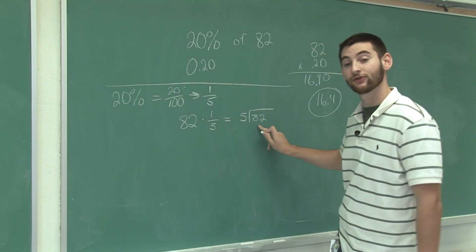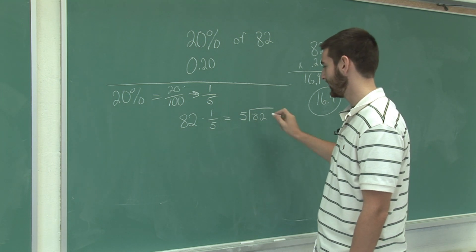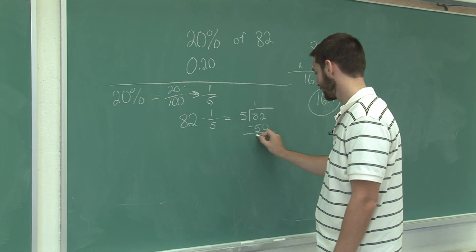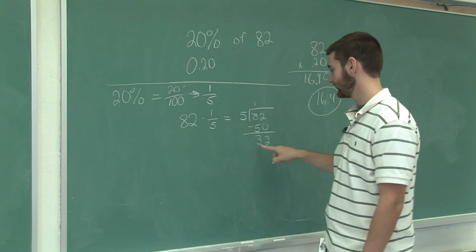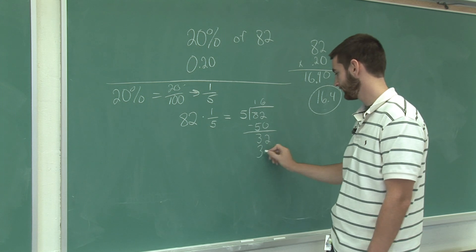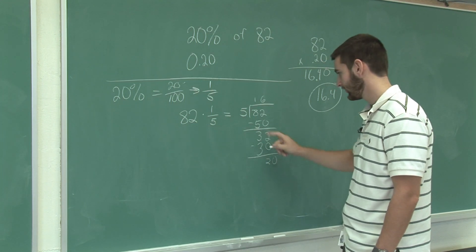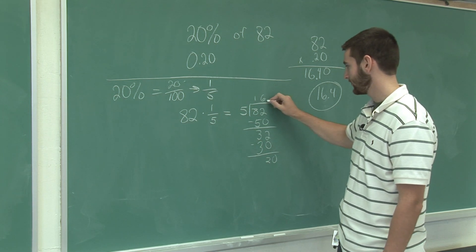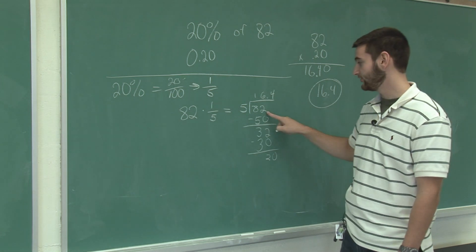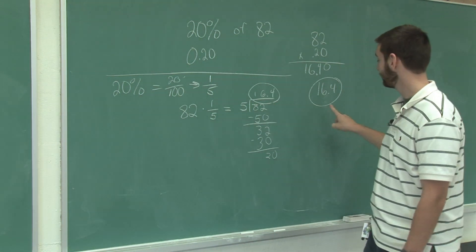So, now we're going to do some long division to find out what 1 fifth of 82 is. 5 into 8, 1 time. 5 into 32, 6 times. 5 times 6 is 30. And bring down the 0. 5 into 20, 4 times. So, 20 percent, or 1 fifth of 82 is 16.4, which agrees with the answer we got in our first method.